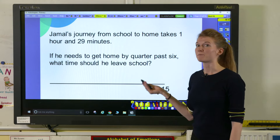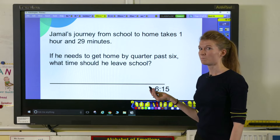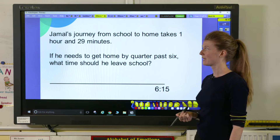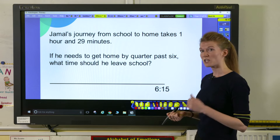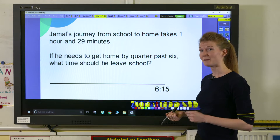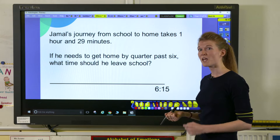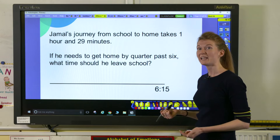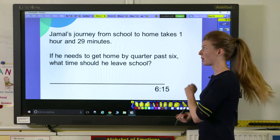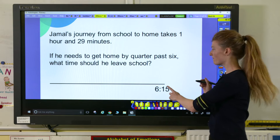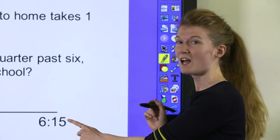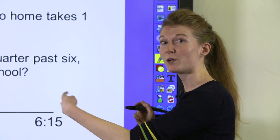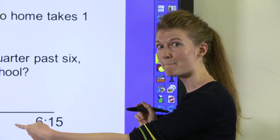Here's another problem about Jamal, and this one's slightly different because we know how long his journey lasts and we know what time he needs to be home. What we need to find out is when he needs to leave school in order to make it home on time. For that reason our time needs to go at the end of our number line and we're going to be working backwards.